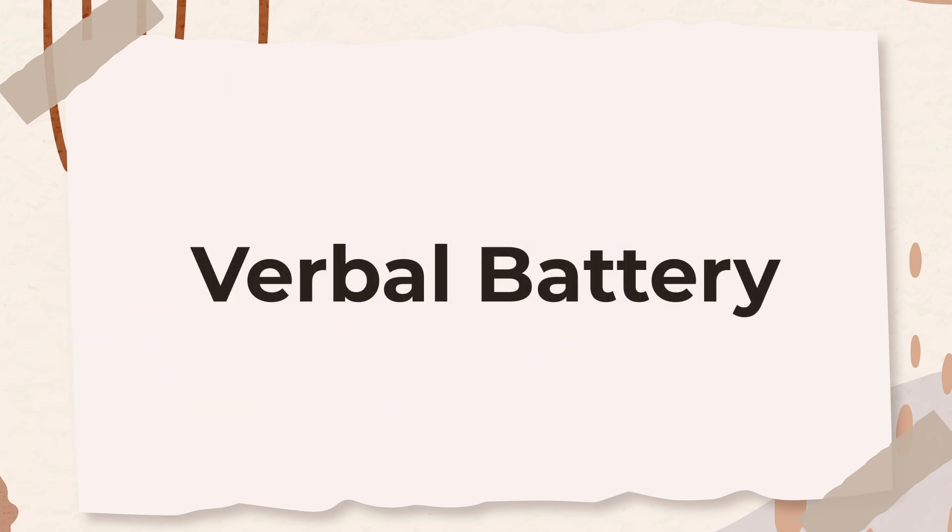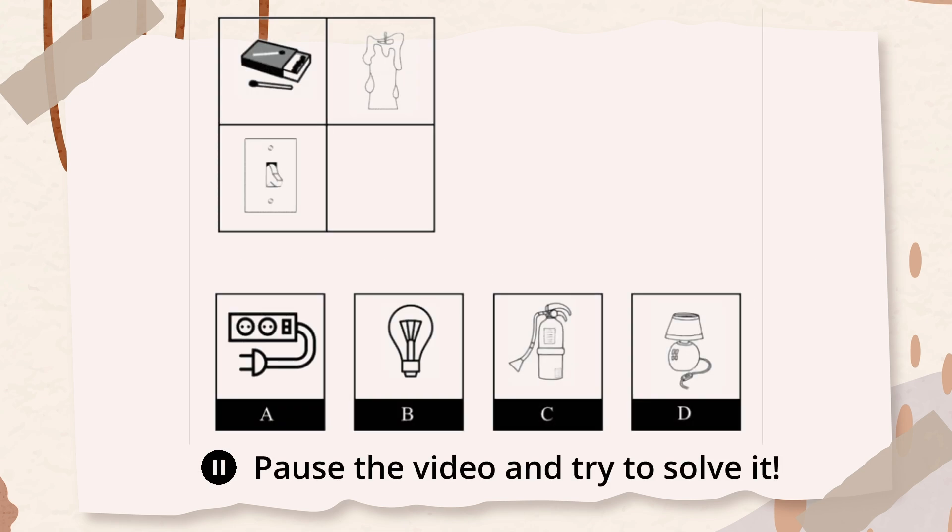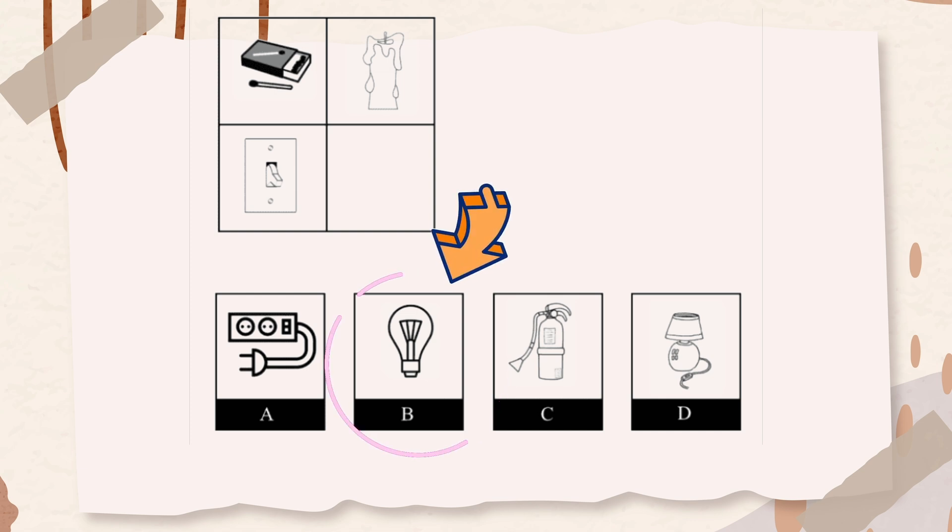The first subtest in this battery is picture analogies. In this question, there are three pictures. The first two pictures go together in some special way. Choose the picture from the answer choices that goes with the third picture. The first row shows matches that are used to light the candle. Similarly, the electric switch is used to turn on the bulb. Therefore, the correct answer is option B.